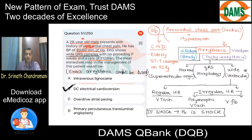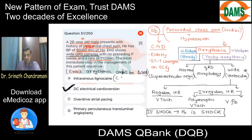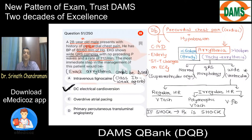Cardioversion will be the treatment in this patient. Intravenous lignocaine is no longer much recommended. It is a Class 1B anti-arrhythmic drug, which is a relatively weak agent. It is indicated only in stable ventricular tachycardia — it could have been given in a stable VT, but here the patient is not stable.